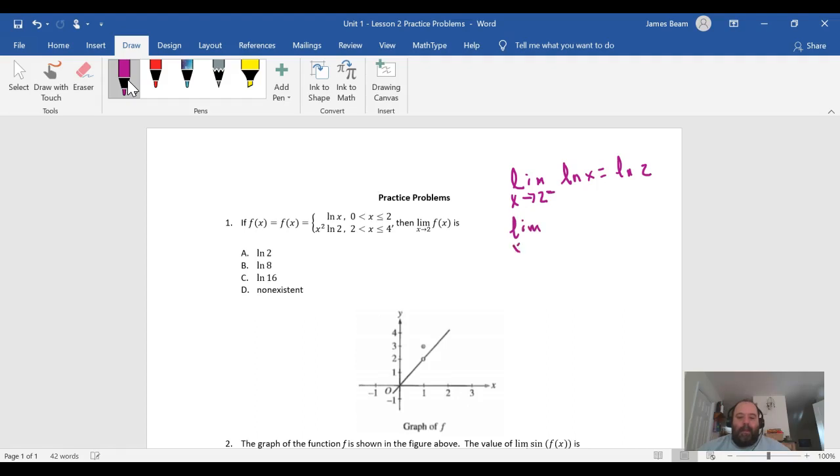And then if I take the limit as X approaches two from the right, that's going to be of X squared times the natural log of X—well that's going to give me, let's see, two squared is four. Sorry, it's not times the natural log of X, that's not correct—it's times the natural log of two, which is going to give me four times the natural log of two. These are not equal, which means that ultimately this limit has to be non-existent.